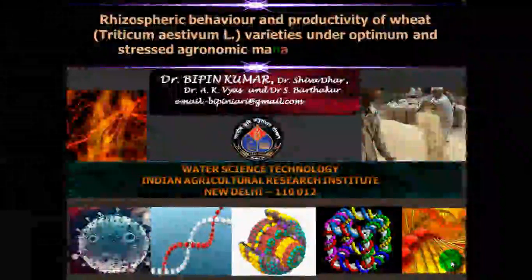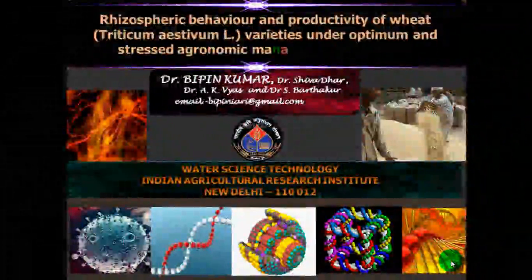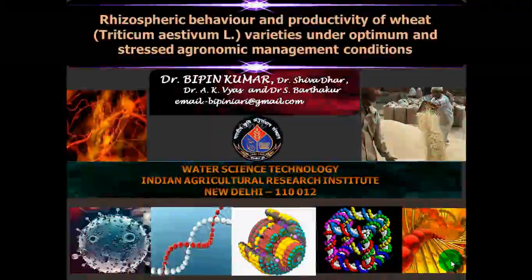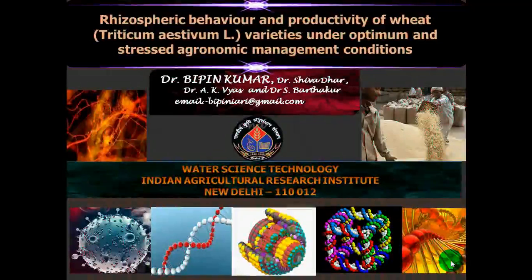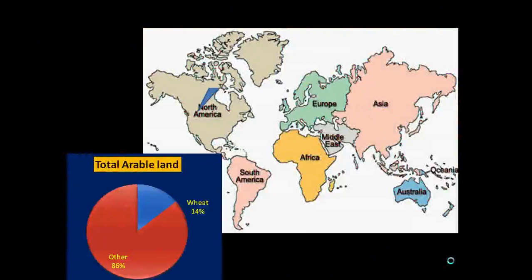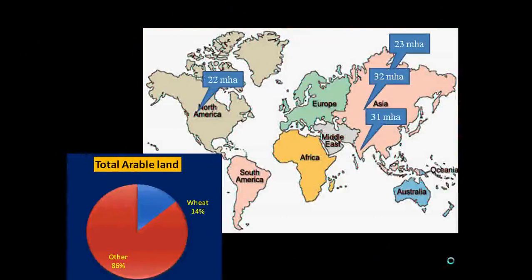This lecture covers the digestive behavior and productivity of wheat variety under optimum and stressed economic management conditions. Wheat is one of the most important crops in the world, a crop of prosperity. Important wheat-growing regions include China first, followed by India, then the USSR.